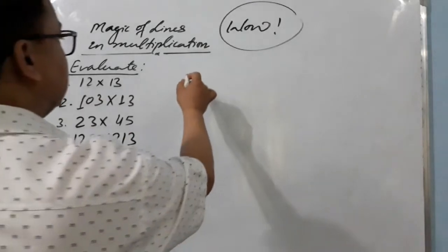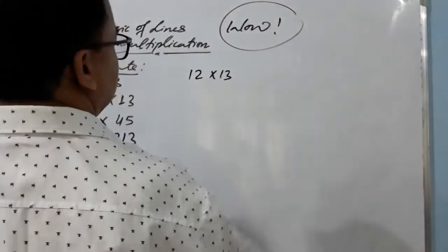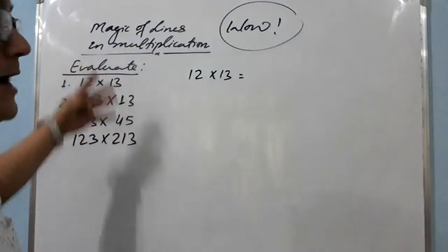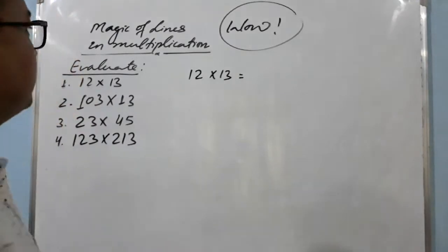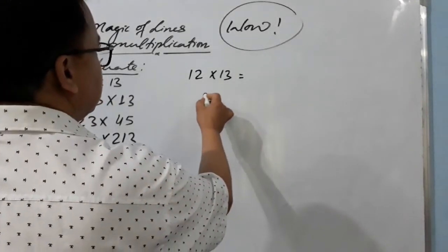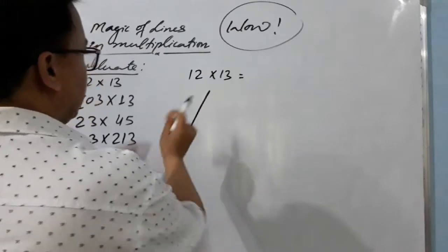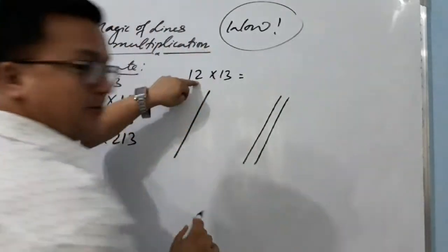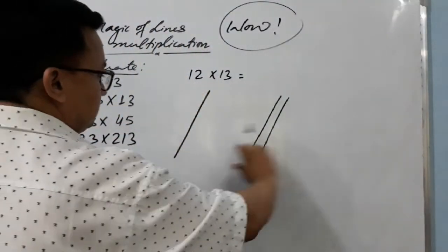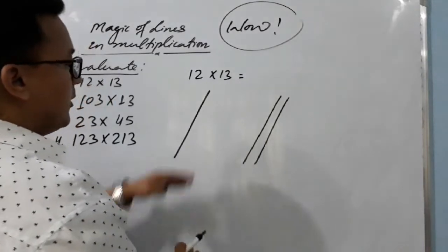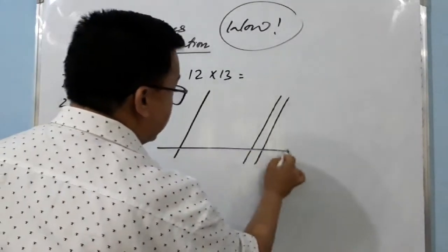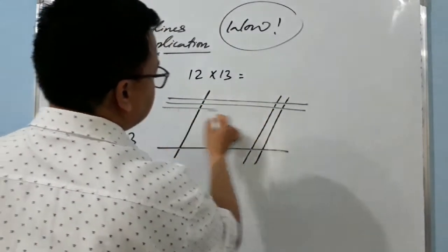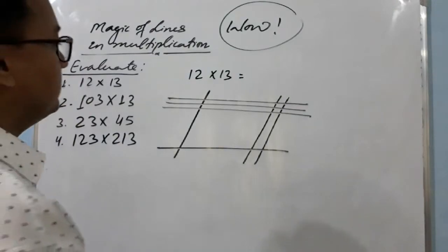How to do 12 times 13? I will tell you in a very simple way, just with the help of lines. Let's see the magic of the lines. You just draw one line for the '1', and then two more lines for the '2'. Now from the bottom, draw one line for '1' and then three lines for '3'.